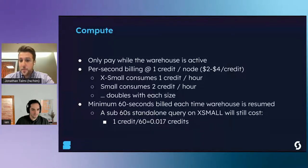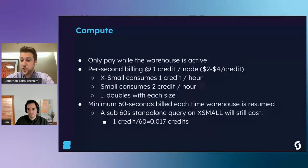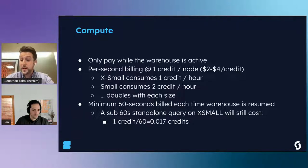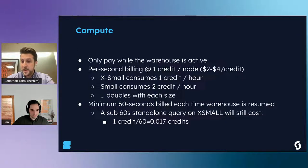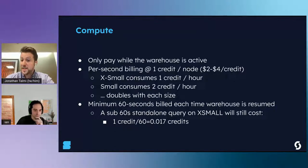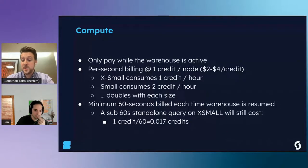Snowflake customers are billed for compute every second that a warehouse is active. Warehouses cost a specific number of credits that doubles with every warehouse size: an extra small costs 1 credit per hour, a small costs 2 credits per hour, etc. The credit-to-dollar ratio is variable depending on your contract, but typically ranges between $2 and $4. As soon as the warehouse is suspended you stop getting billed, but there's a minimum billing period of 60 seconds. So a standalone 5-second query on an extra small warehouse will still cost you a full minute of uptime - 1 credit divided by 60 minutes. Warehouses should always be processing queries when online, and should be suspended as soon as they're done to avoid idle time.